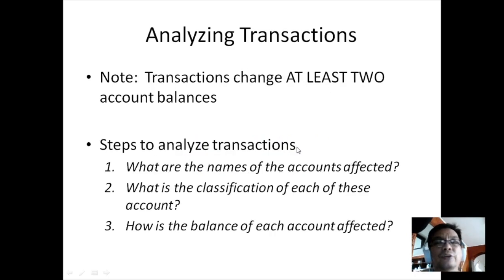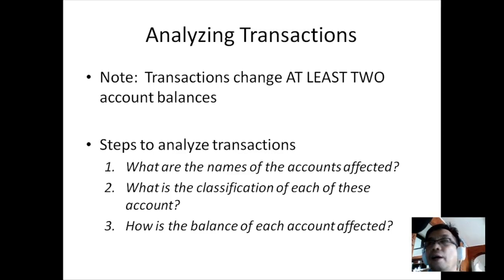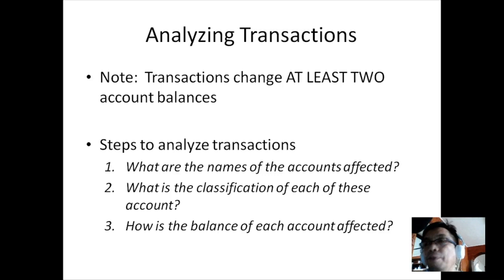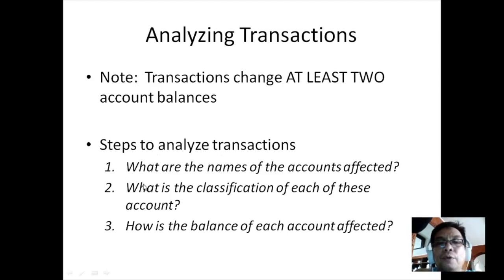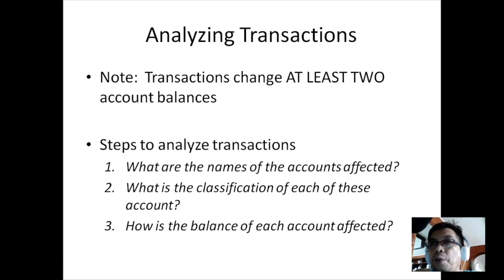Transactions change at least two account balances — it's impossible for a transaction to affect only one account. The minimum is two, but there can also be three or four depending on the transaction. The steps to analyze a transaction are: first, identify the names of the accounts affected; then, determine the classification of each account — whether it is an asset, liability, capital, revenue, or expense.